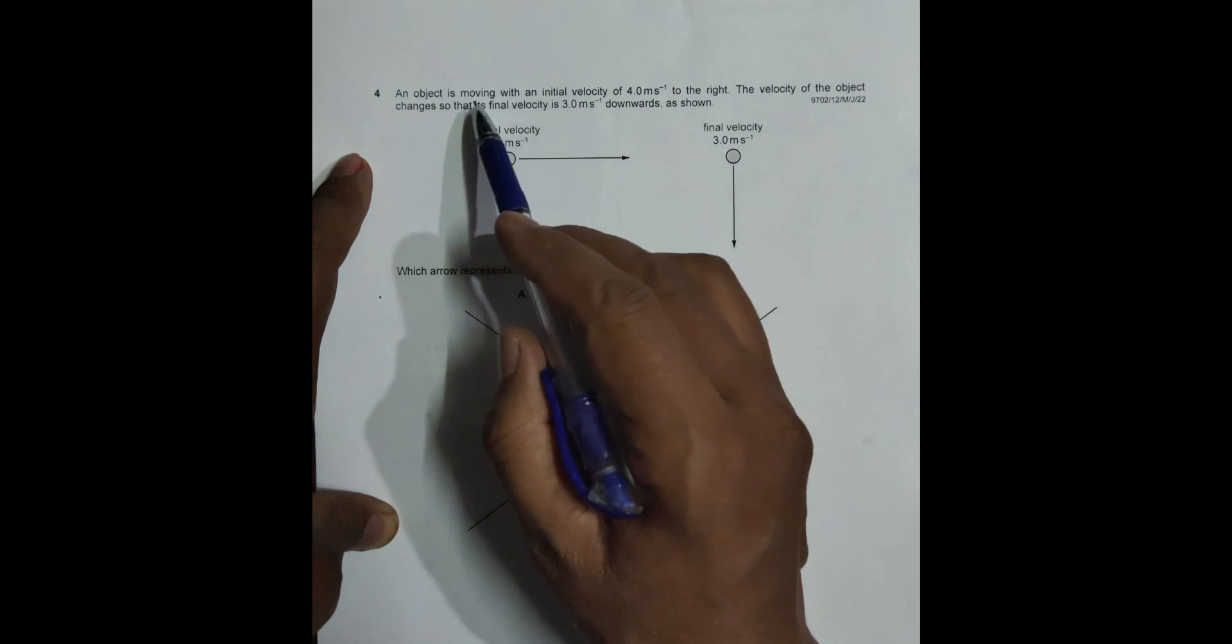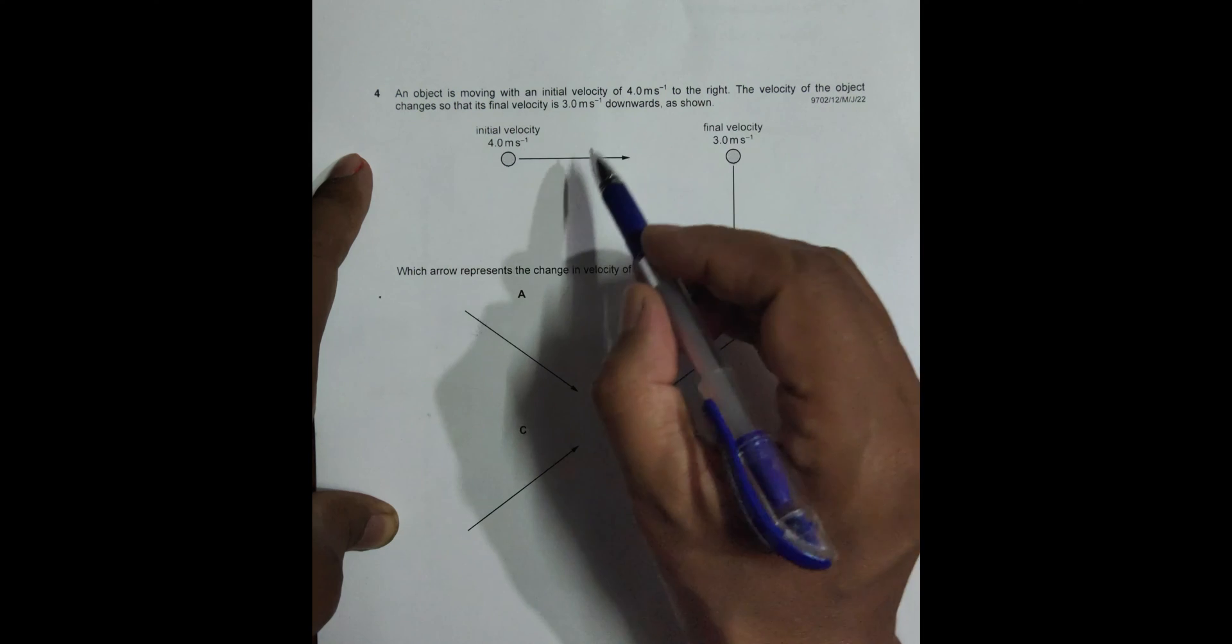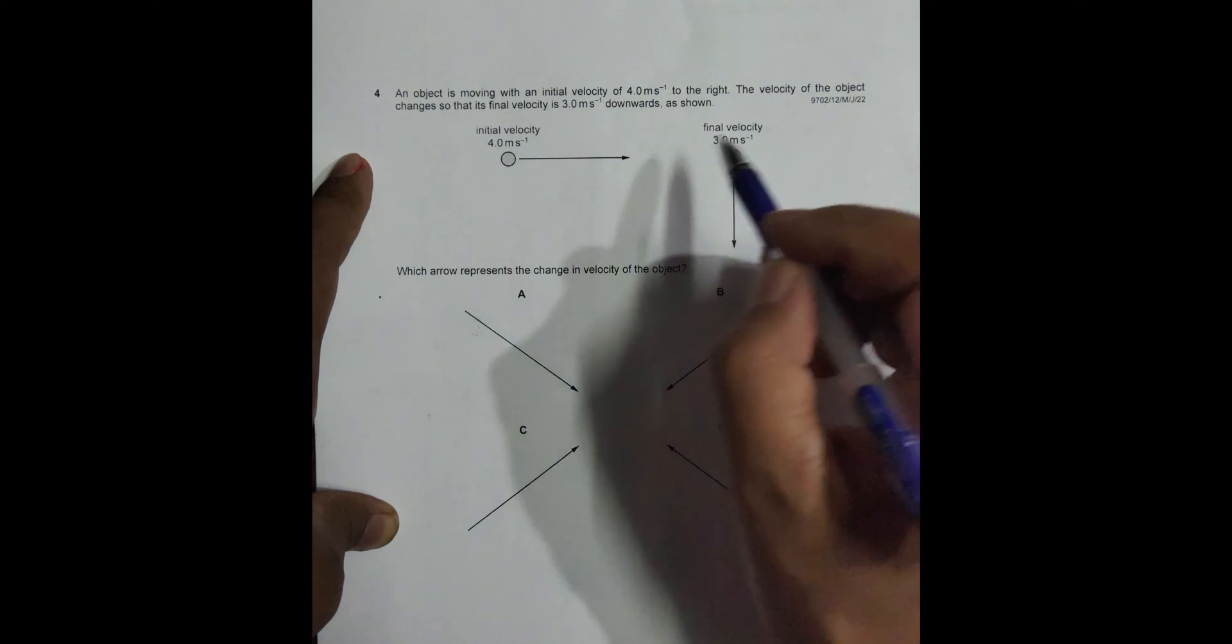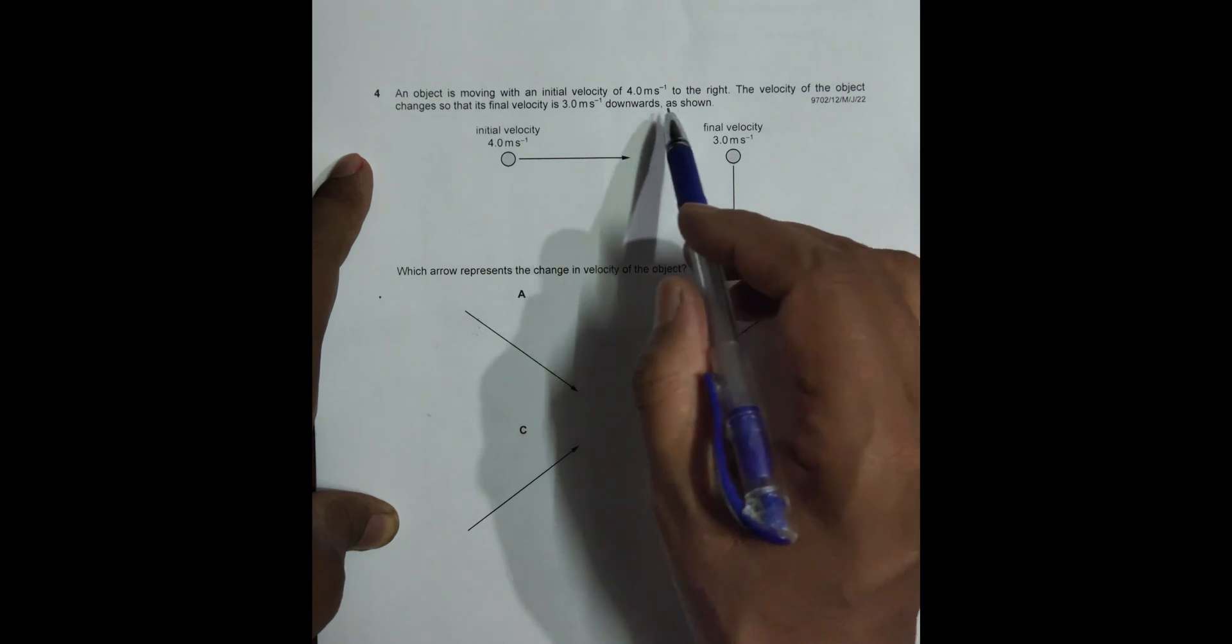We can read the question: An object is moving with an initial velocity of 4 meter per second to the right. The velocity of the object changes so that its final velocity is 3.0 meter per second downward, as shown. So something strikes it and its velocity is like this.